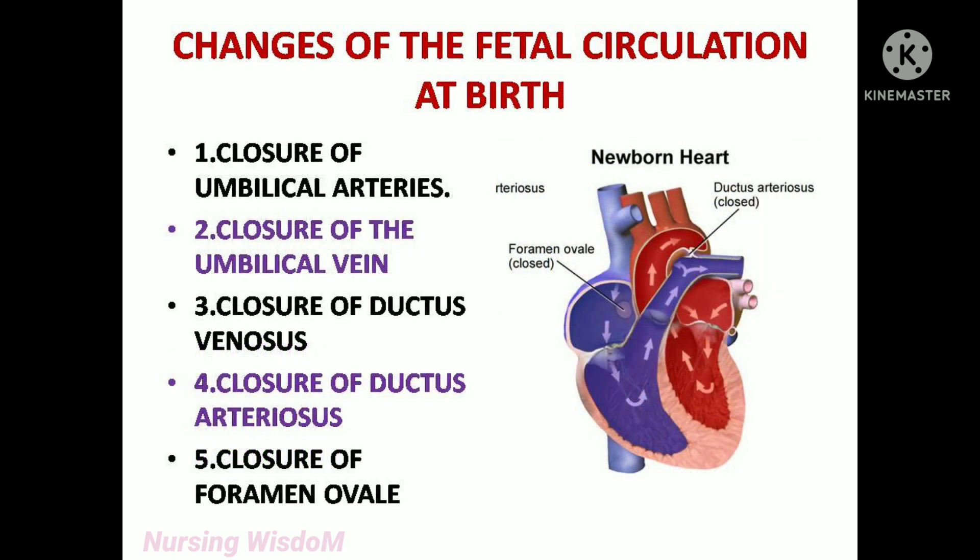What are all the changes that occur in fetal circulation after birth? Closure of umbilical arteries, closure of the umbilical vein, closure of ductus venosus, closure of ductus arteriosus, and closure of foramen ovale.